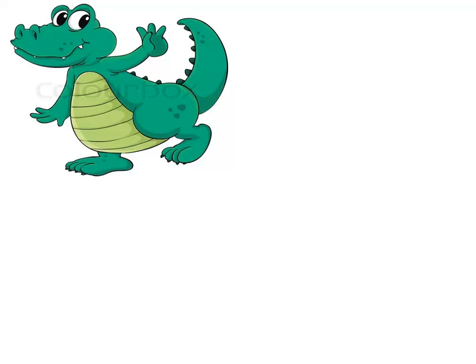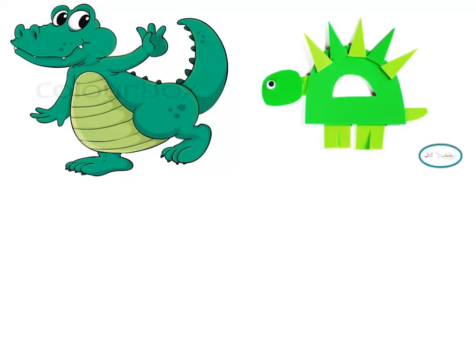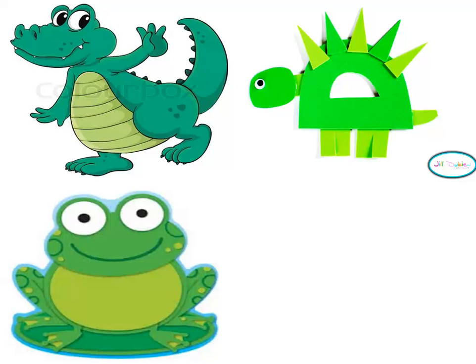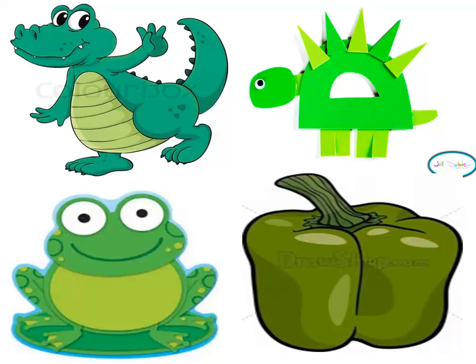Let's take another color. What's this? It's a crocodile. And what's the color of the crocodile, baby class? Green, it's a green crocodile. And what's the color of this turtle? Green, excellent, it's a green turtle. And what's the color of this frog? Green, it's a green frog. And this — what color? Green, it's a green pepper, excellent!